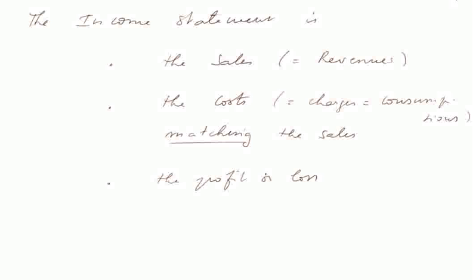The income statement is very simply a presentation of the sales — also called revenues, also called turnover — the cost, also called charges, also called consumptions, but specifically the cost matching the sales. That is, the cost incurred specifically in the accounting cycle to create the sales. And at the bottom of the income statement, there will be the calculation of the difference.